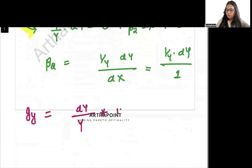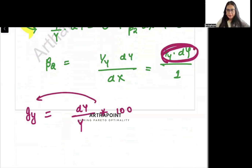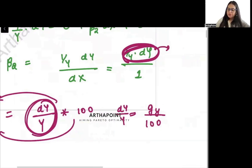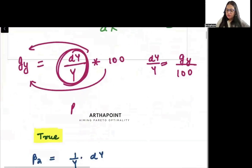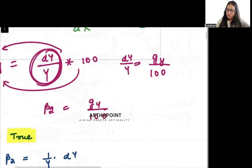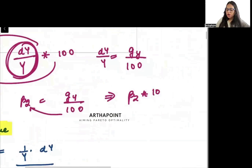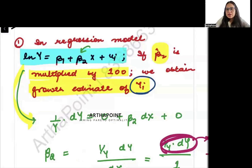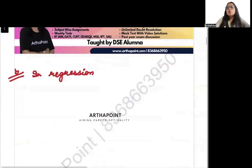The formula of growth rate of y is: change in y divided by the original value of y, times 100. So (1/y)dy = growth rate of y / 100, which means β₂ × 100 = growth rate of y. Therefore this statement is TRUE — multiplying β̂₂ by 100 gives the growth rate of y.